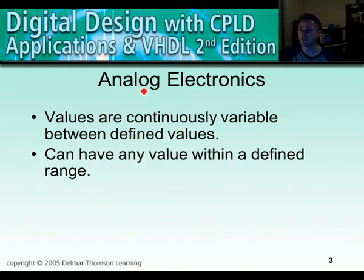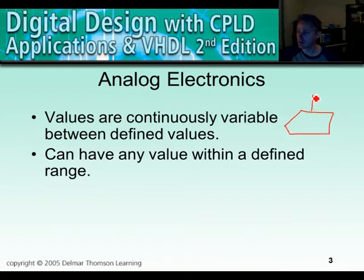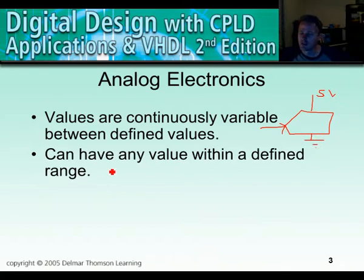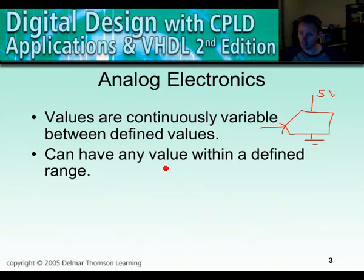To summarize: analog electronics values are continuously variable between defined values. Even in analog there is a certain range — for example, if an analog-to-digital converter is connected to 5 volts, the analog input signal would be limited to 5 volts. But digital values have both a limit and they only occur in discrete steps — integers. Analog can have any value within a defined range.